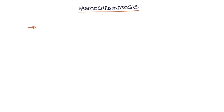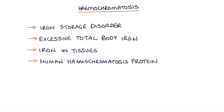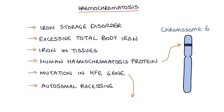Hemochromatosis is an iron storage disorder that results in excessive total body iron and the deposition of iron in tissues. The human hemochromatosis protein, abbreviated to HFE, is encoded by a gene located on chromosome 6, and the majority of cases relate to mutations in this gene. However, there are other genes that can also cause the condition. The hemochromatosis genetic mutation is inherited in an autosomal recessive way, and the gene is important in regulating iron metabolism in the body.